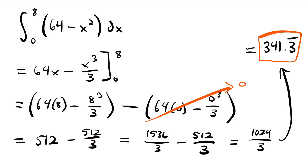So the actual area underneath this function from 0 to 8 is 341.3 repeating. When we used the midpoint rule we found 344 — look at how close these two values are. It's only about 3 off, compared to the right and left Riemann sums of 272 and 400, which are much further off. The midpoint rule is definitely a better approximation of the area under the curve. Let's look at one more example.